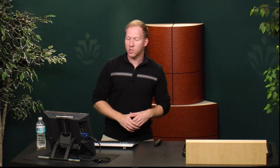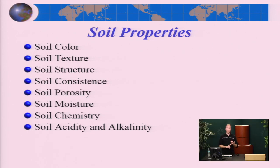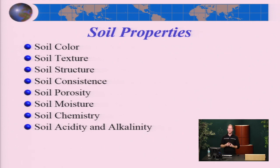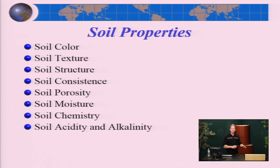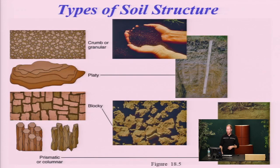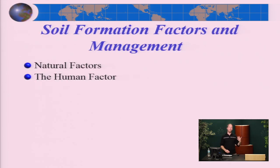As a summary of soil properties: color tells you about chemical makeup; texture tells you about the size distribution — sand, silt, and clay; structure tells you about the organization of the soil; consistence is the stickiness, how well it sticks together; porosity is the permeability — how easily water can move through it; moisture tells you how much water is there, with field capacity being the maximum the soil can store; and soil chemistry — acidity and pH — acidic soils must be neutralized to grow agricultural crops. Those are the basic soil properties for the final exam.